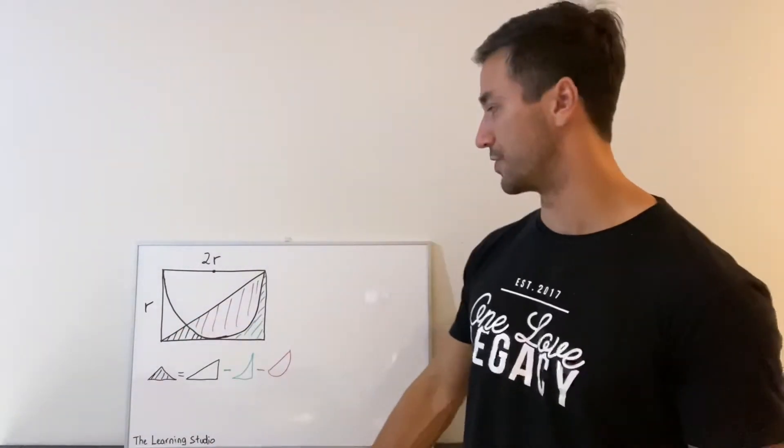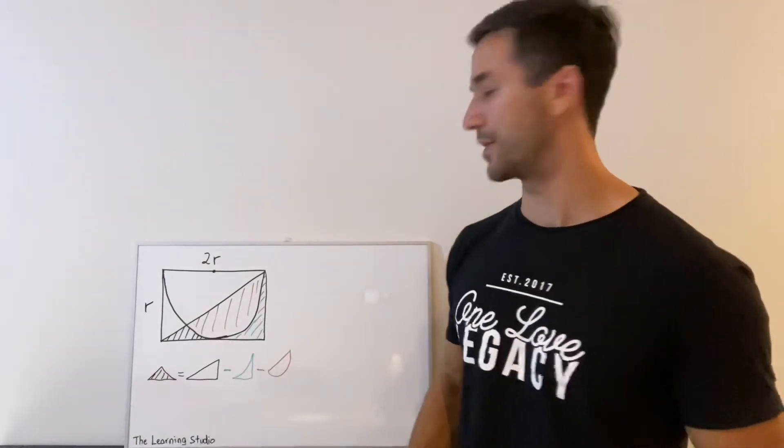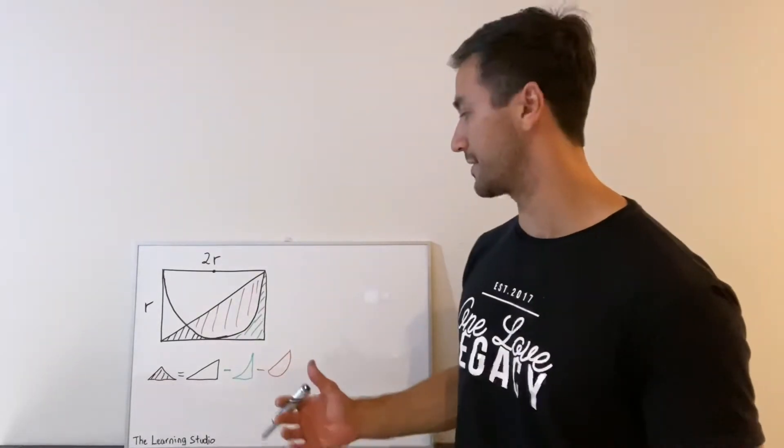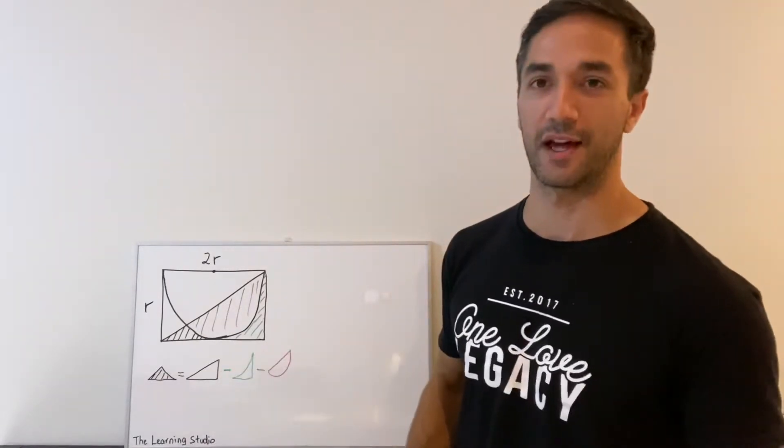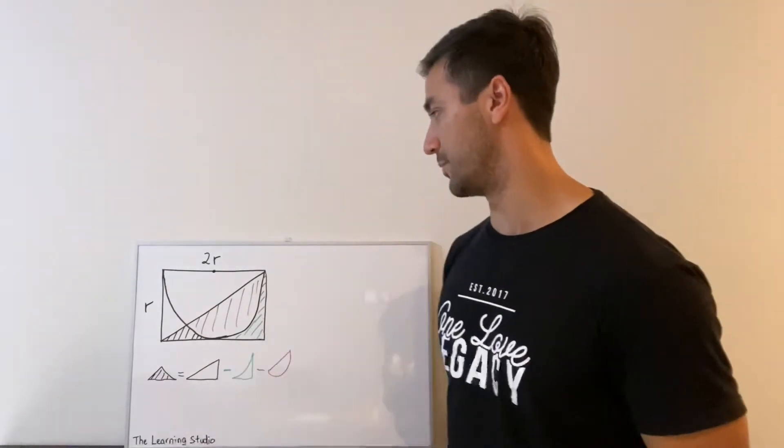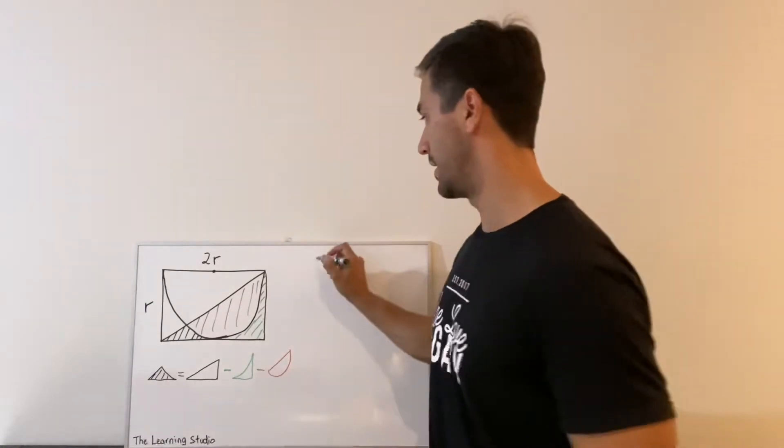Okay, so far so good. It wasn't too hard to come up with a strategy to attack this problem, and if we look at the first two bits, they're actually not that hard to work out. So first of all, we've got the area of the triangle, so that's easy.